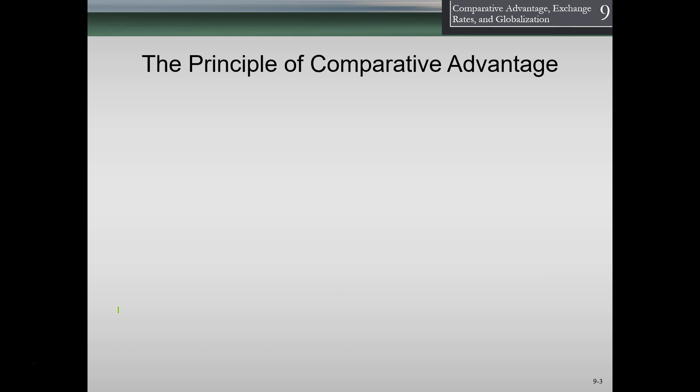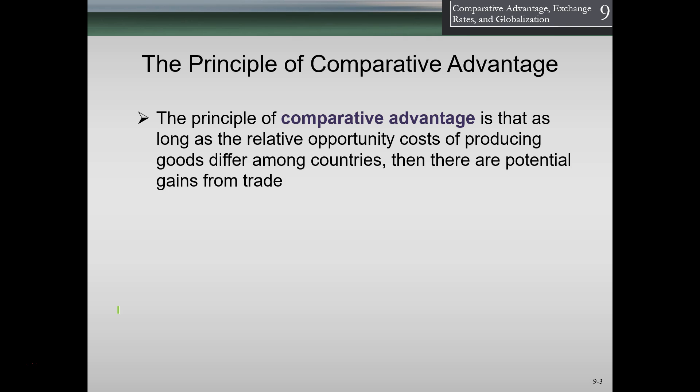So the principles of comparative advantage. We've talked about comparative advantage before, and we can apply the idea to individuals, to firms, or to countries. We're going to compare it to countries here. The principle of comparative advantage is that as long as the relative opportunity costs of producing goods differ among countries, then there are potential gains from trade.